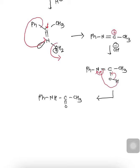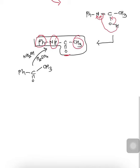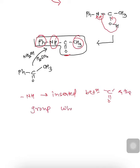Not considering stereochemistry, the starting material Ph-C(=O)-CH3 on reaction with NH2OH and H2SO4 is converted to an amide derivative. As a shortcut to remember: the NH group is inserted between the carbonyl group and the group which has the higher migratory aptitude — that is, the group which better stabilizes the carbocation formed during migration.